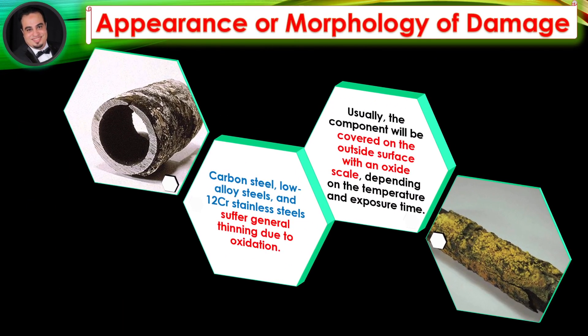Appearance or morphology of damage. Carbon steel, low-alloy steels, and 12 chromium stainless steels suffer general thinning due to oxidation. Usually, the component will be covered on the outside surface with an oxide scale, depending on the temperature and exposure time.